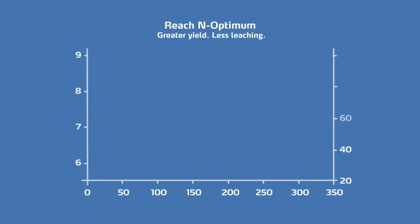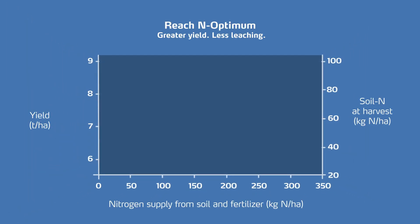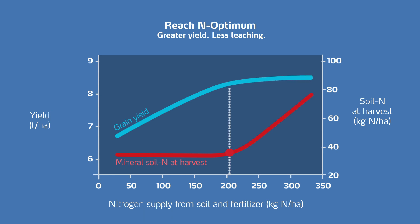You will optimize the rate, timing, and variable application of your nitrogen to reach your nitrogen optimum. By applying the optimum rate of nitrogen, you achieve the highest rate of return for every kilo of nitrogen that you apply to your crops, while minimizing nitrate leaching losses.